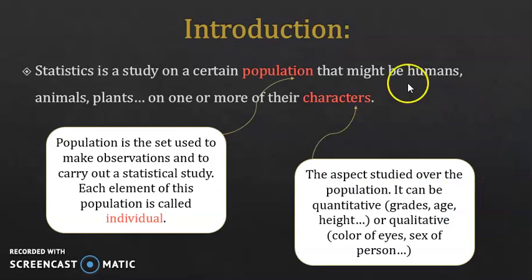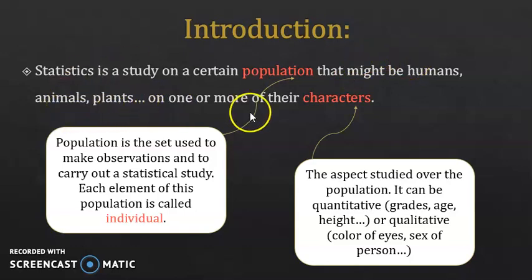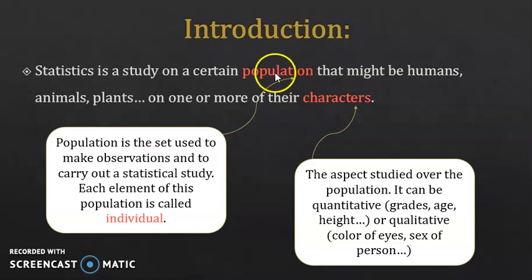First, what's statistics? Statistics is a study on a certain population — that might be humans, animals, plants, etc. — on one or more of their characters. So, what's the population? The population is the set used to make observations and to carry out a statistical study.